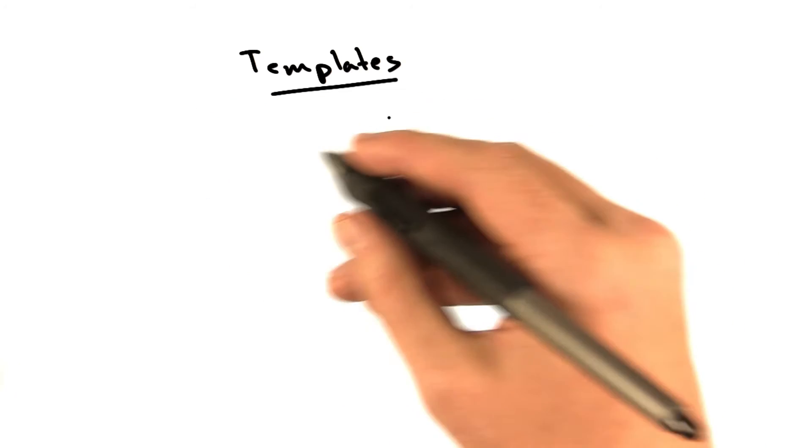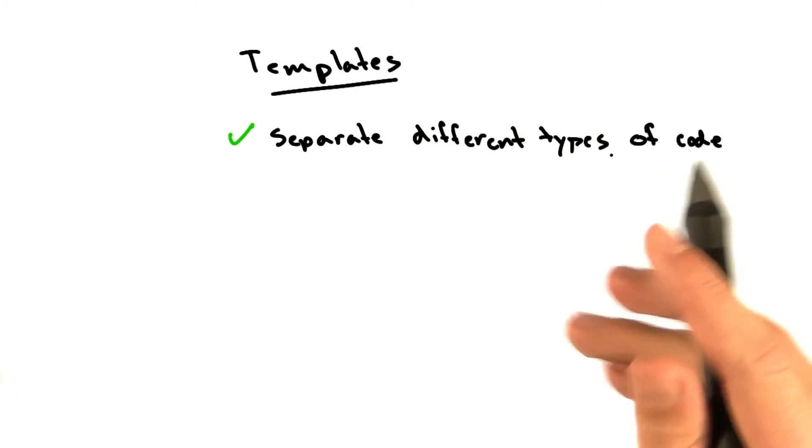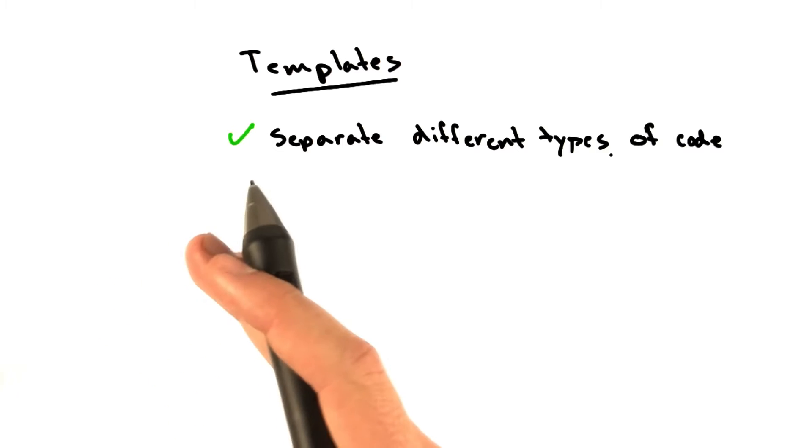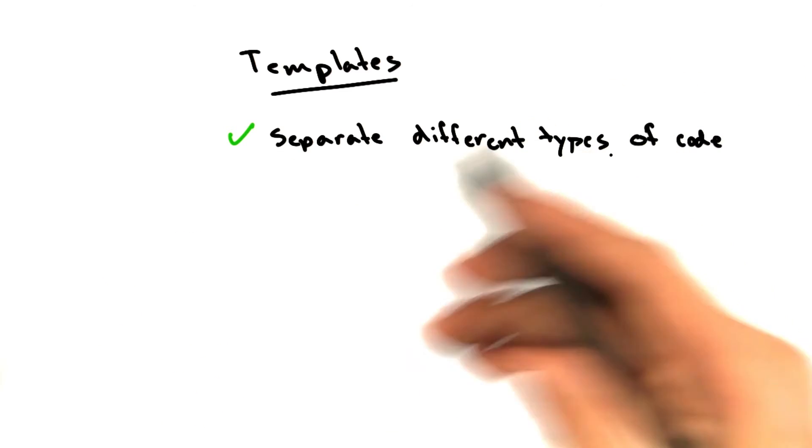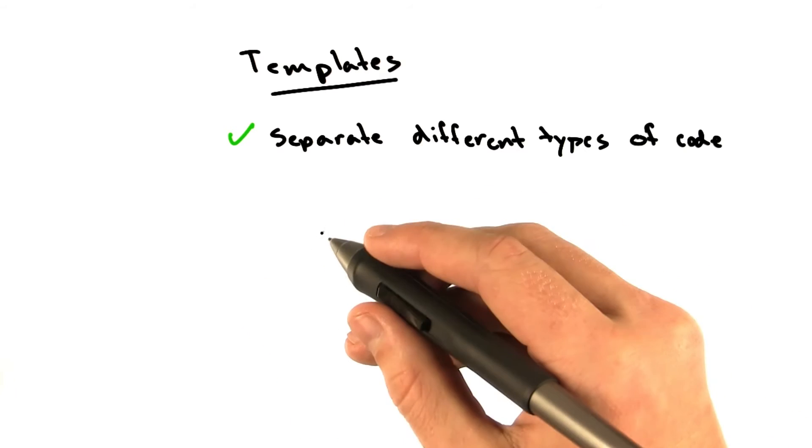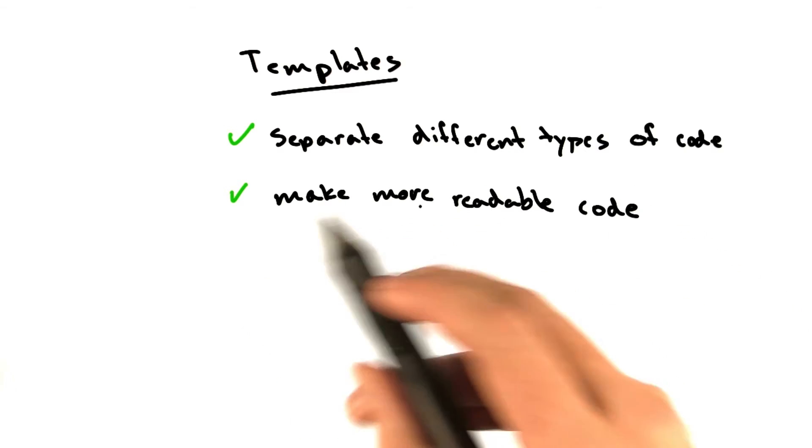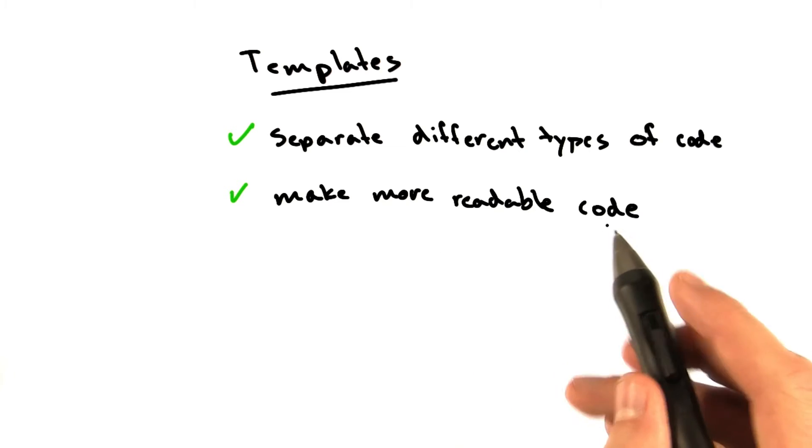Just remember that templates are a great way to separate different types of code. You can keep your HTML separate from your Python for the purposes of this class, which will make your life a little bit easier, I hope, or at least your code a little bit more clean. They make more readable code—better organized code is more readable.